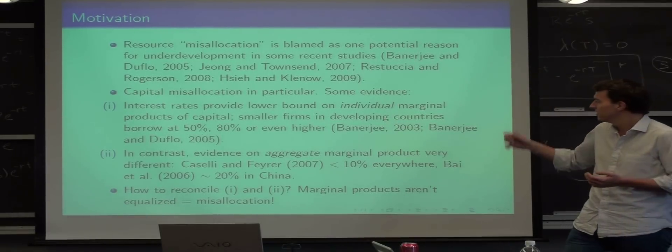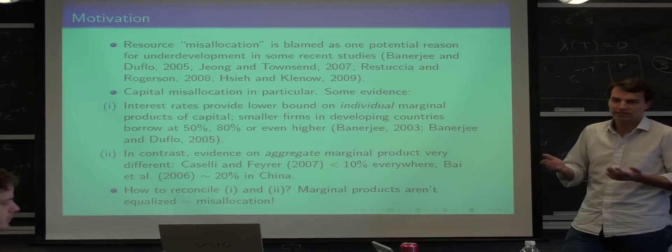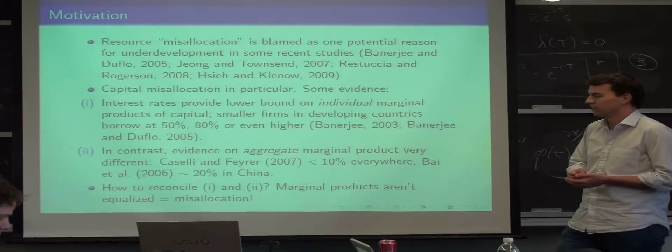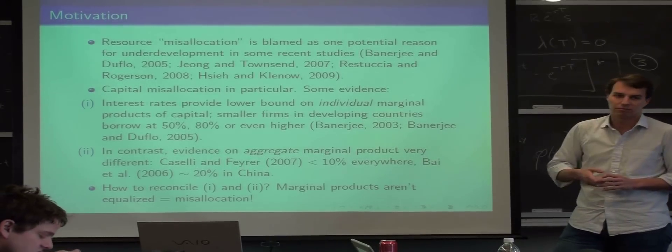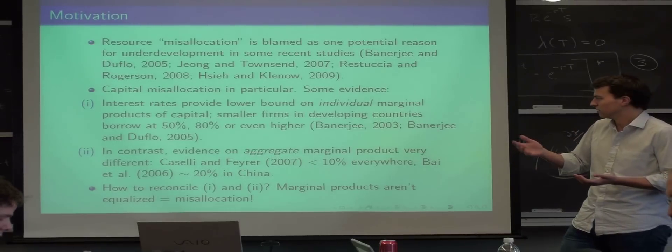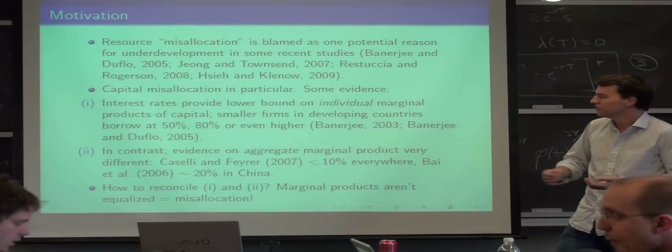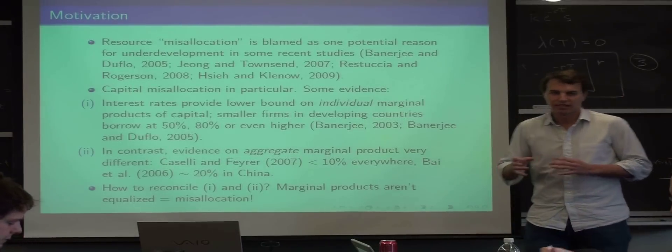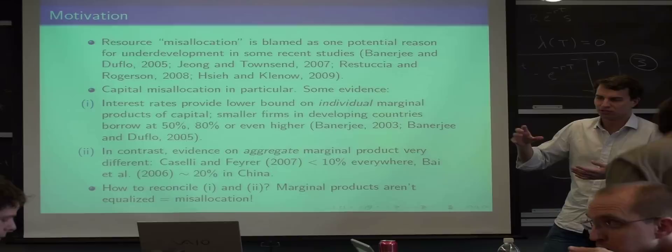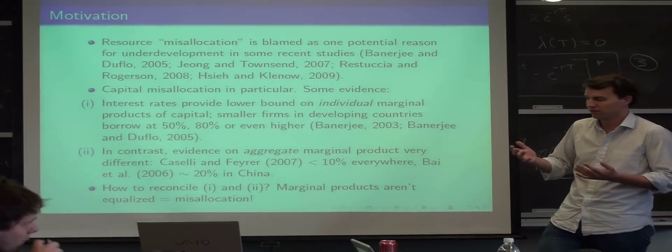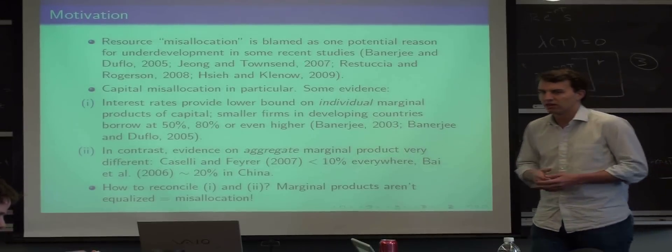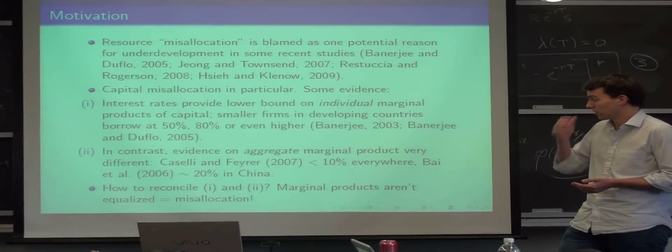Then you look around in developing countries, and you look at what interest rates people are prepared to pay for loans for productive purposes, and you see crazy numbers like 50%, 80%, or even above 100% per year. So that's pretty strong evidence that the marginal products of people are actually higher than that. There's a little bit of an issue here because you might think that the default rates are high, but these studies here show that actually default is pretty low, and so these are actually lower bounds on individual marginal products.